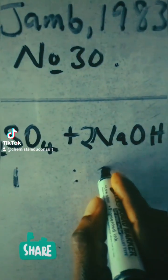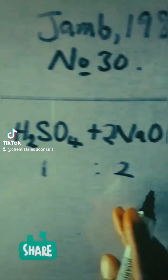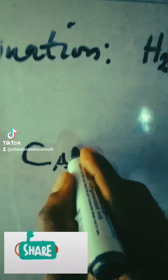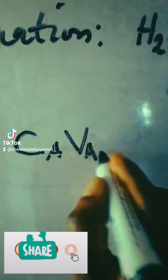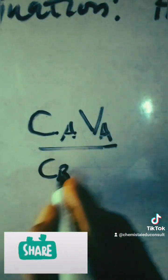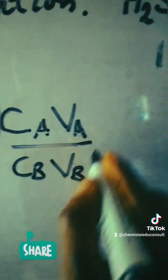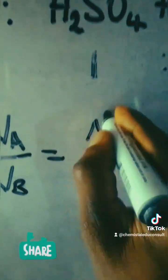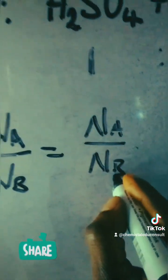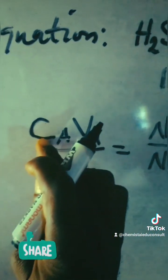This here is the formula: concentration of the acid times volume of the acid over concentration of the base times volume of the base will give you number of moles of the acid over number of moles of the base, because number of moles means concentration times volume.